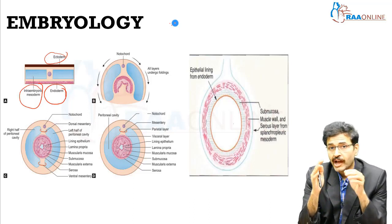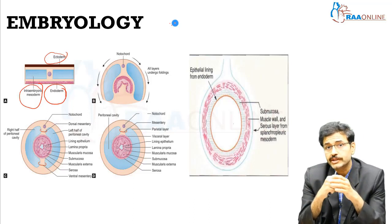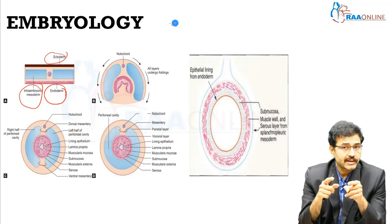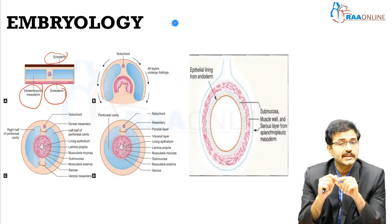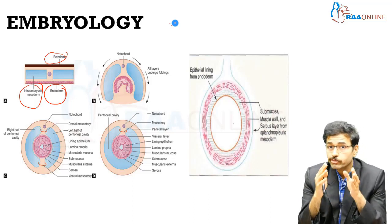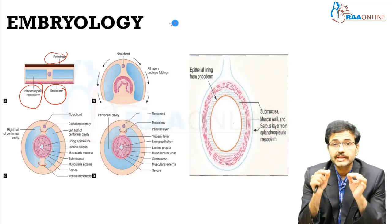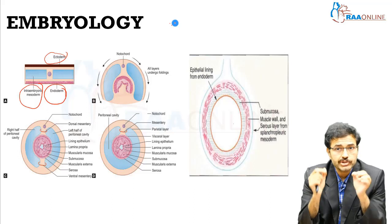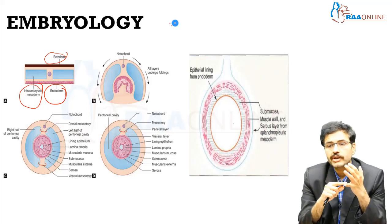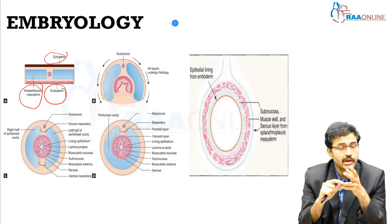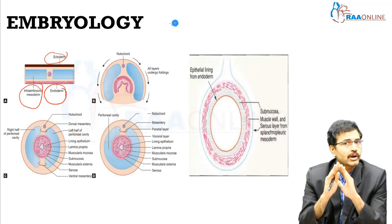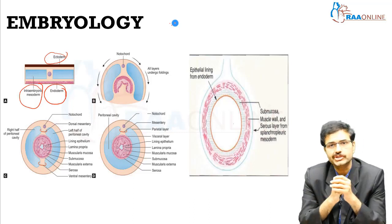To elaborate on the derivatives of the gut, the gut is of endodermal origin. To be more specific, the epithelial lining of the gut is of endodermal origin. Whereas the submucosa, the muscular wall, the blood vessels, and the peritoneum covering it are all of mesodermal origin.